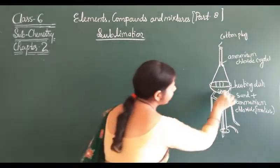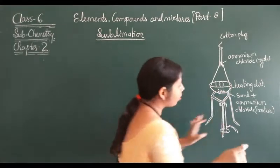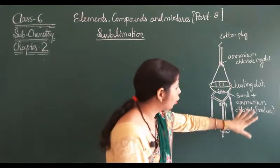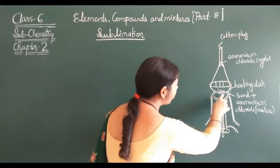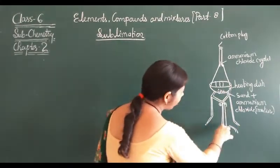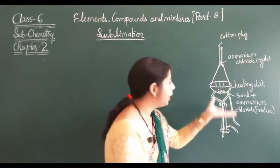We put the mixture of sand and ammonium chloride in a dish, put it on a tripod stand, and heat it with a Bunsen burner.